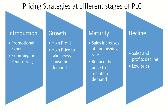Skimming pricing means charging a high price initially, and then decreasing it day by day. Penetration pricing is the opposite — starting with a small price and slowly increasing it to a higher price. In the growth stage, there is rapid market acceptance, the product becomes widely accepted, and sales volume increases significantly. At this stage, profit is high, and it is advisable to take advantage of heavy consumer demand and charge a high price.